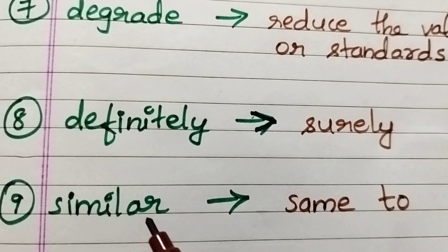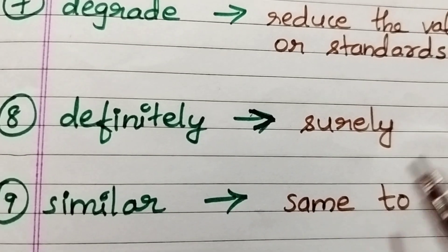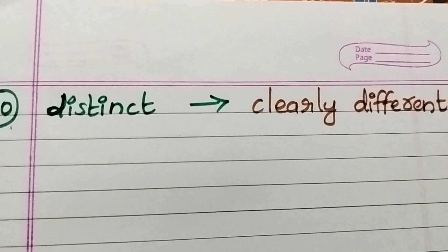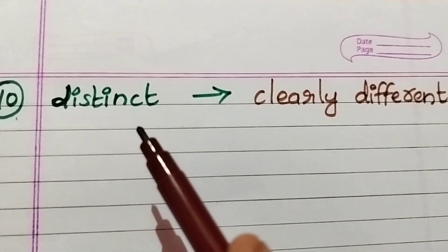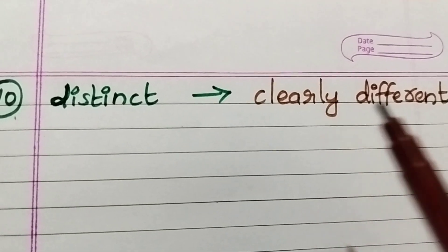Similar means same to. Distinct means clearly different.